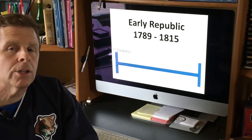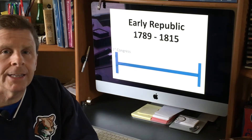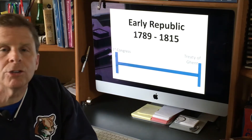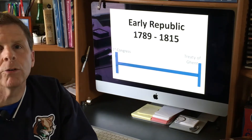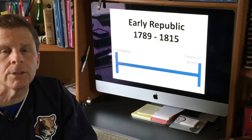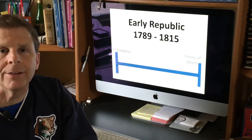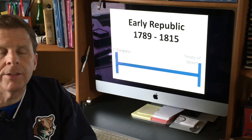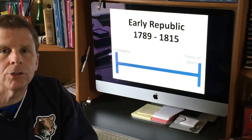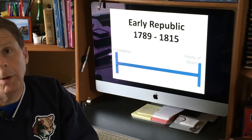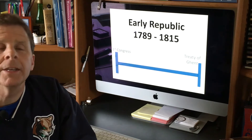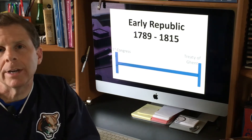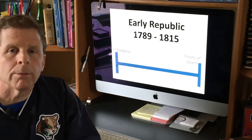We're going to say this period ends in 1815 because that's the end of the War of 1812. The War of 1812 is marked by the Treaty of Ghent that is signed between the British and the Americans to end the war, and so we're going to say it's going to end this period of the Early Republic.